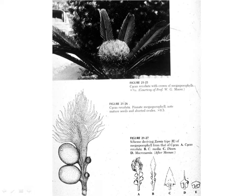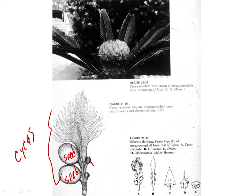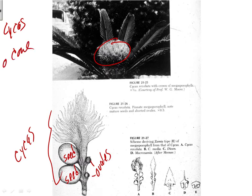Here we have Cycas again, now bearing seeds — the seeds have tremendously enlarged. Here are a couple of unfertilized ovules. Very leaf-like compared to Zamia when you see the cone — the female cone. It doesn't look like a cone as much as we find in Zamia; it's got a much more open appearance. That cone is going to fall apart — it doesn't persist. As the seeds mature, it will eventually fall apart and the megasporophylls will fall off.